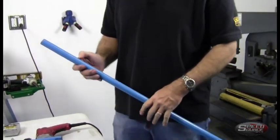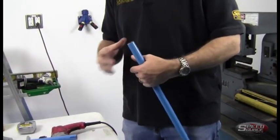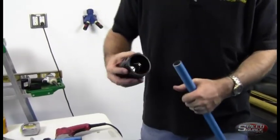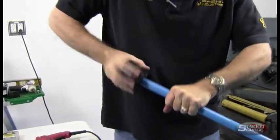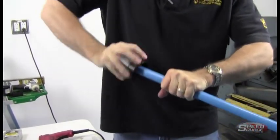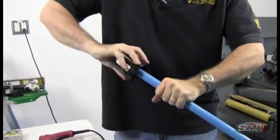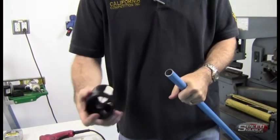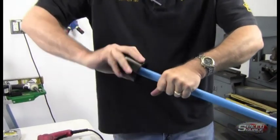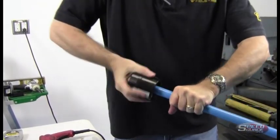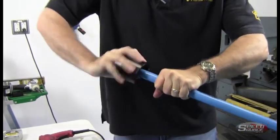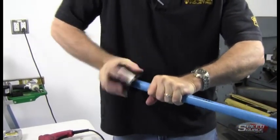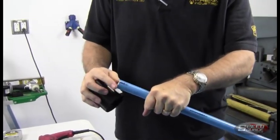We've got a few different options for how to clean up this end. You've got a standard deburring tool—you can twist and rotate, and that's going to clean up this internal edge. Flip it around and you get the external edge. That leaves a really nice taper there.